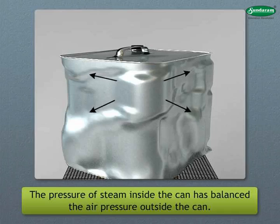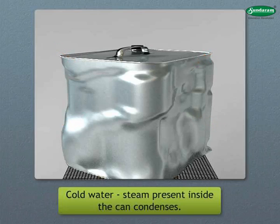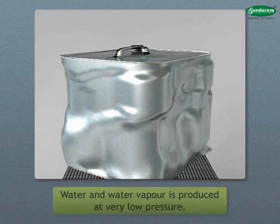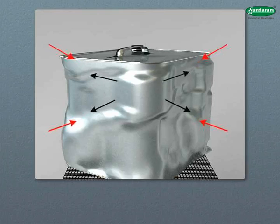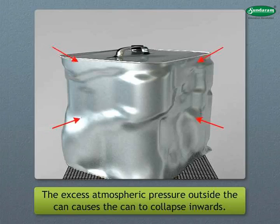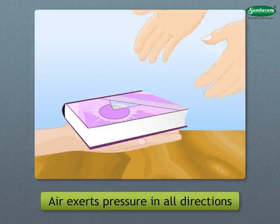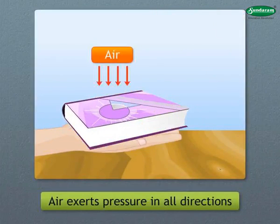It is observed that the can collapses inwards. This is because the pressure of steam inside the can had balanced the air pressure outside. When cold water is poured over the can, the steam inside condenses, producing water and water vapor at very low pressure. Thus, the air pressure outside becomes greater than the pressure inside, causing the can to collapse inwards.